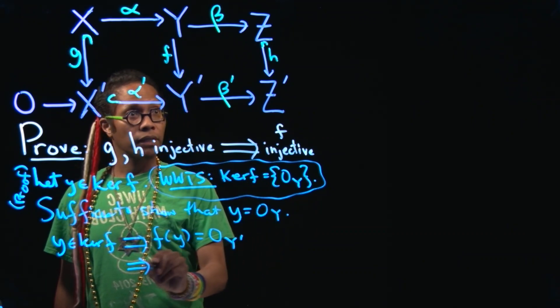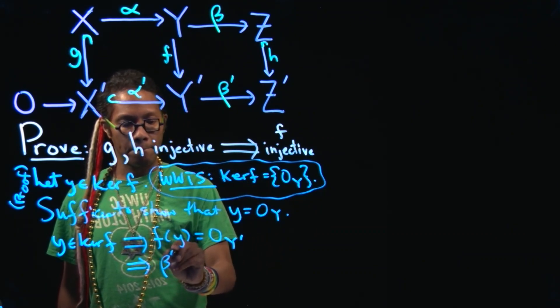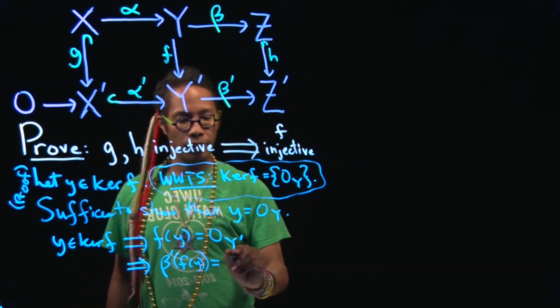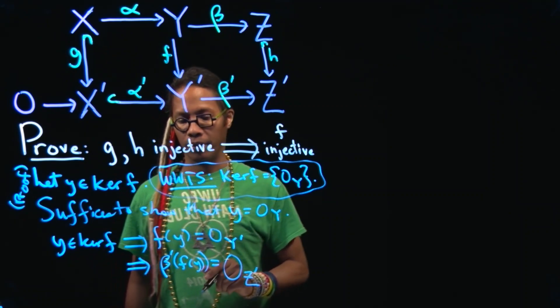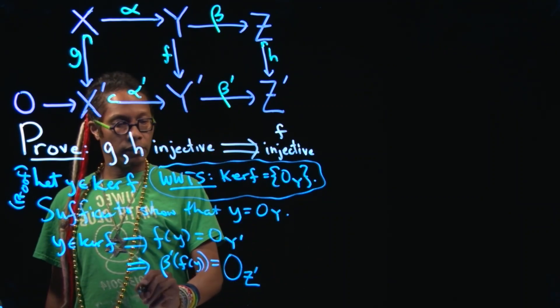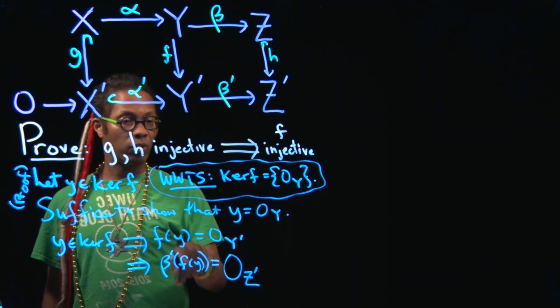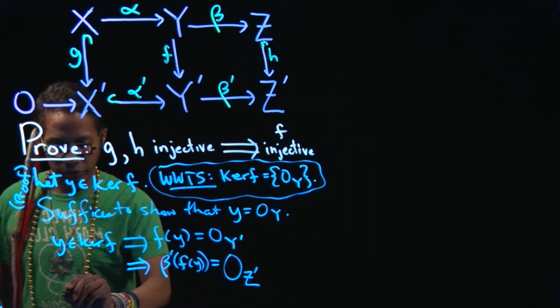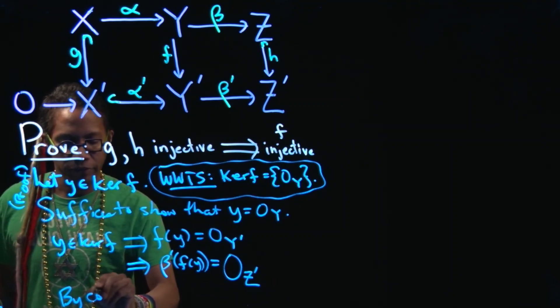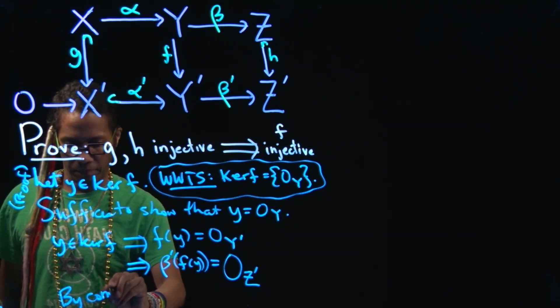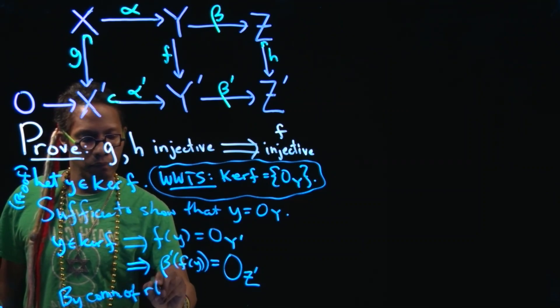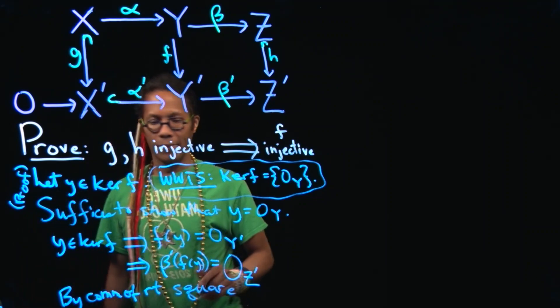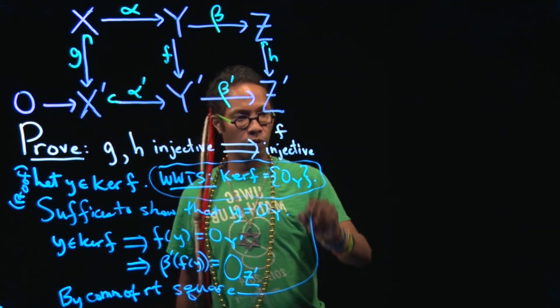And that implies then that beta prime of F of Y is equal to the 0 in the module Z prime. But that means then that F of Y is in the kernel of beta prime but we actually don't care about that. By commutativity of the square, commutativity of the right square. Oh you may not be able to see that. Let's go up here.